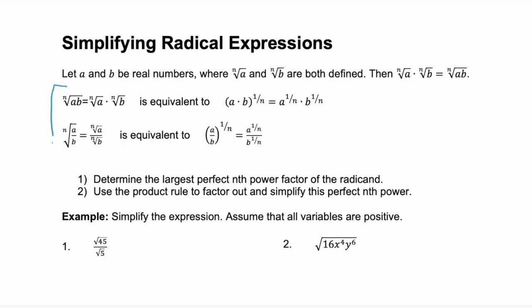We have a couple of rules here. As long as you have the exact same index for your radicals, these rules will apply. The first one is with multiplication, or a product rule. If we have two products, A and B, we can keep them together as one radicand under one radical sign, or we can separate them.